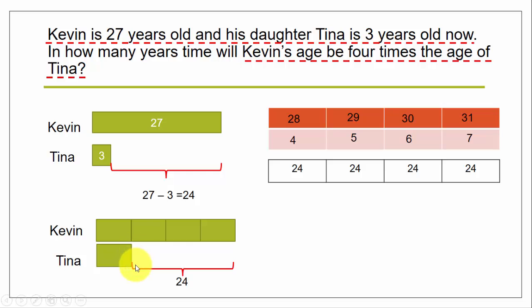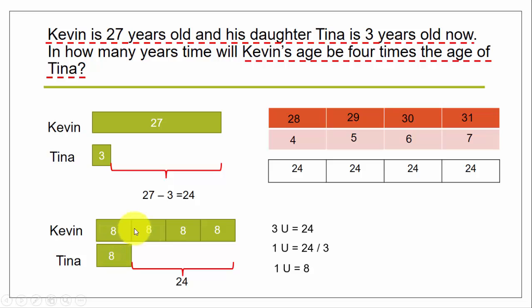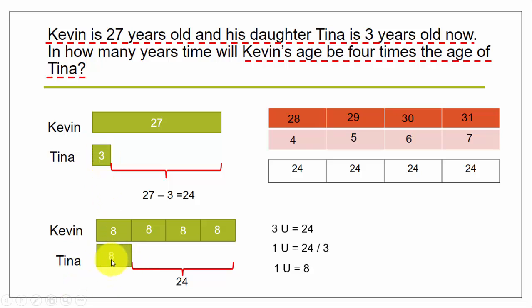This clearly shows that the three units — because each of these blocks are the same size — the three units equal 24. So one unit is 24 divided by 3, which is 8. If one unit is 8, each block is 8. So when Tina is 8 years old, her father Kevin will be four times as old as Tina. Right now Tina's age is 3.